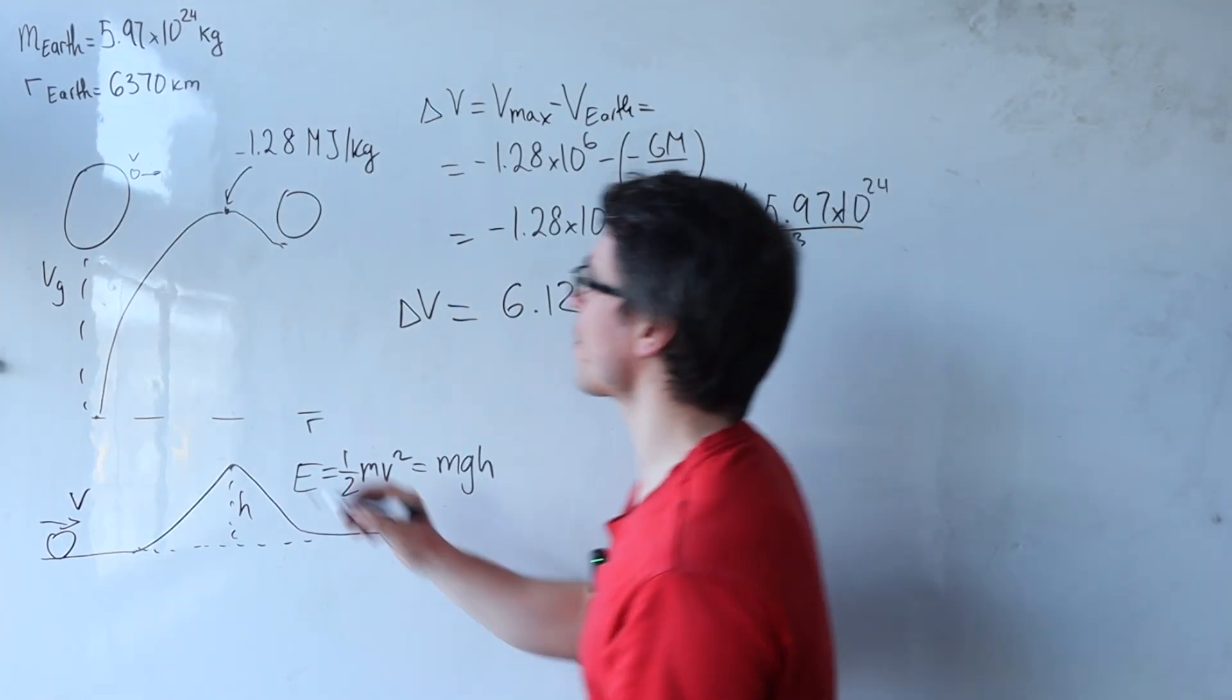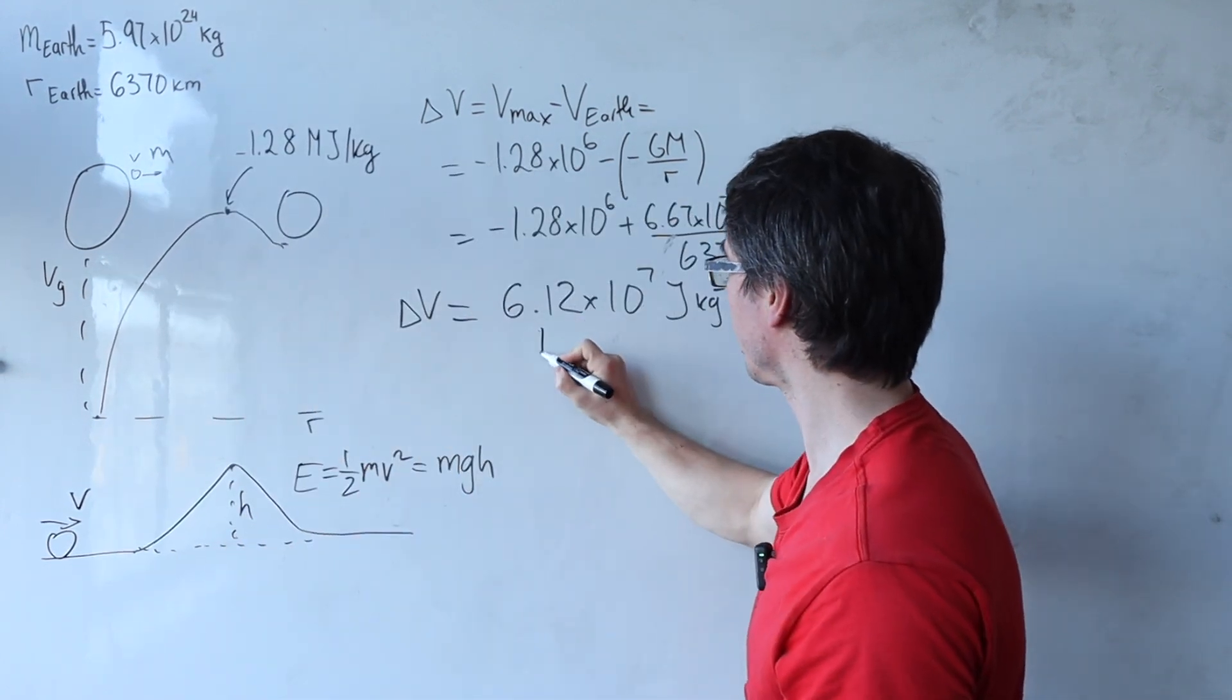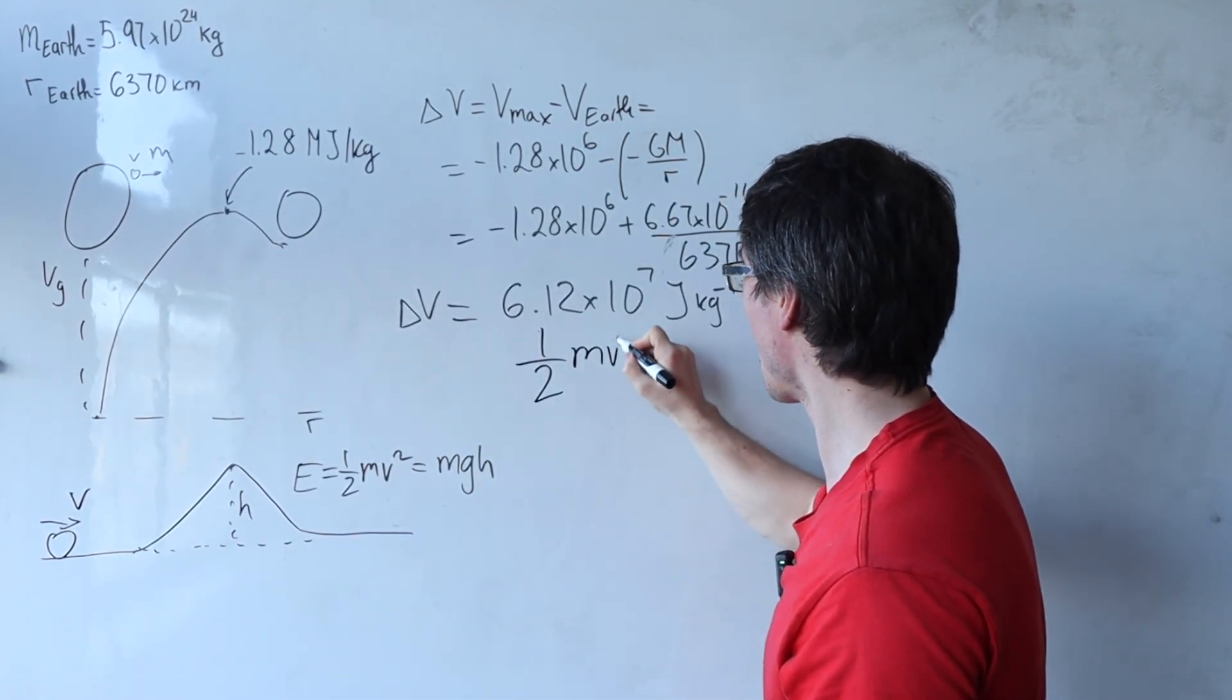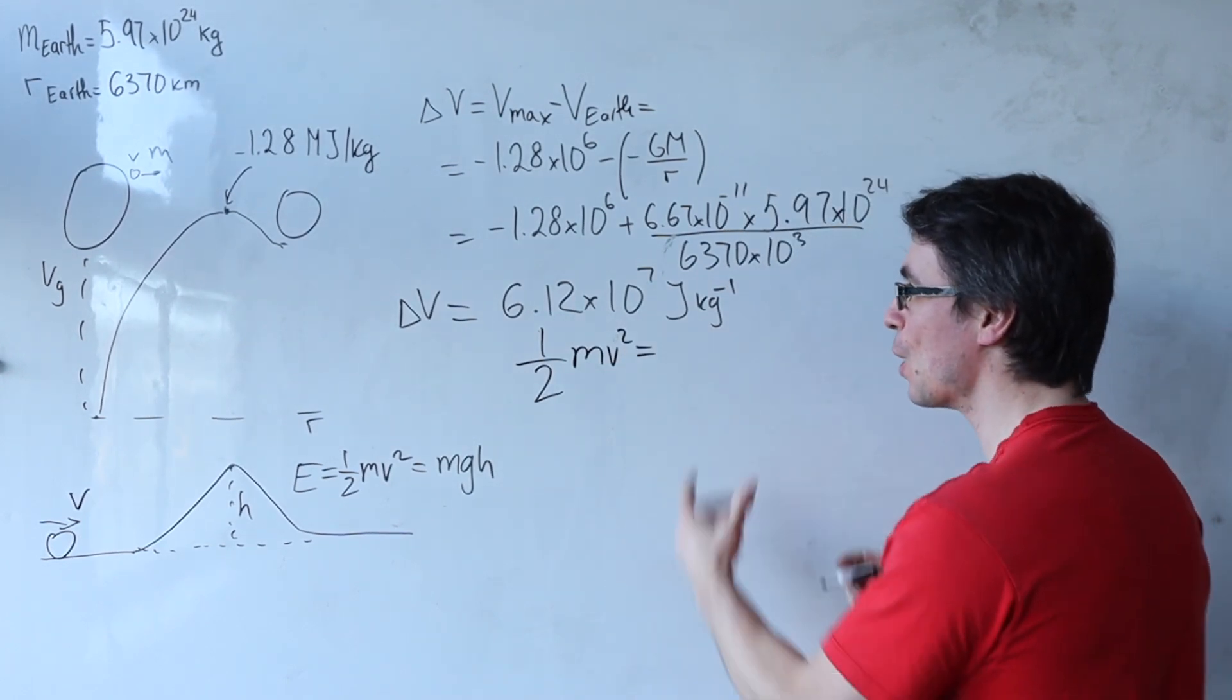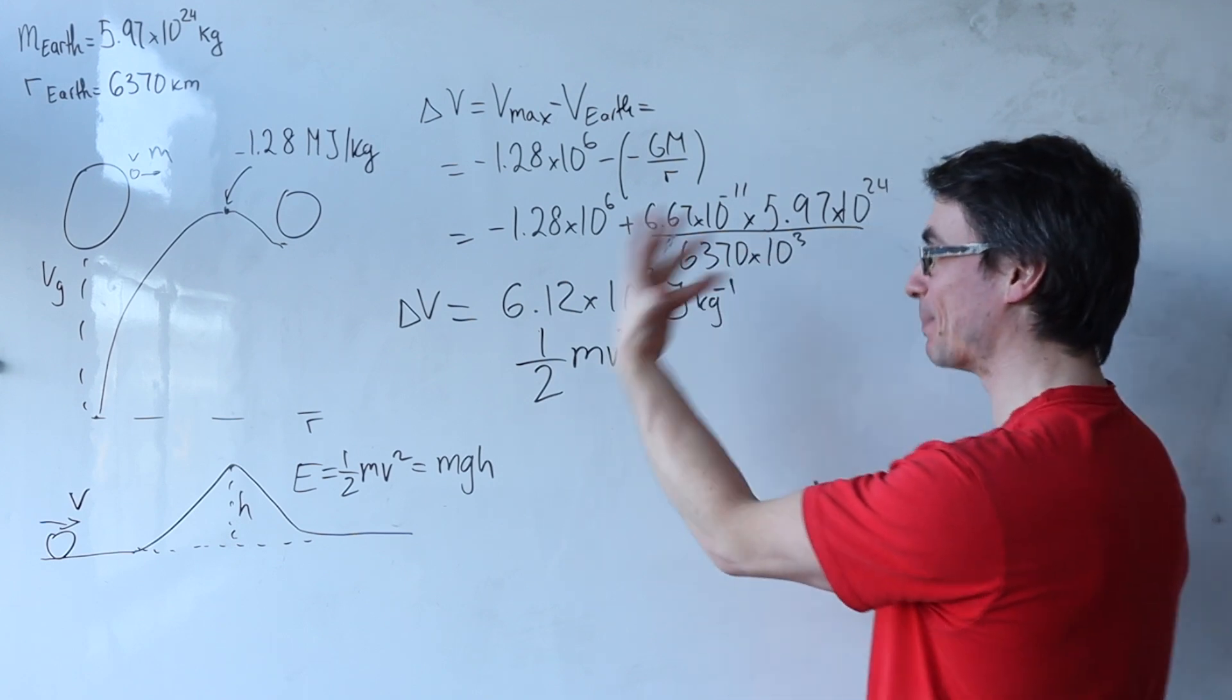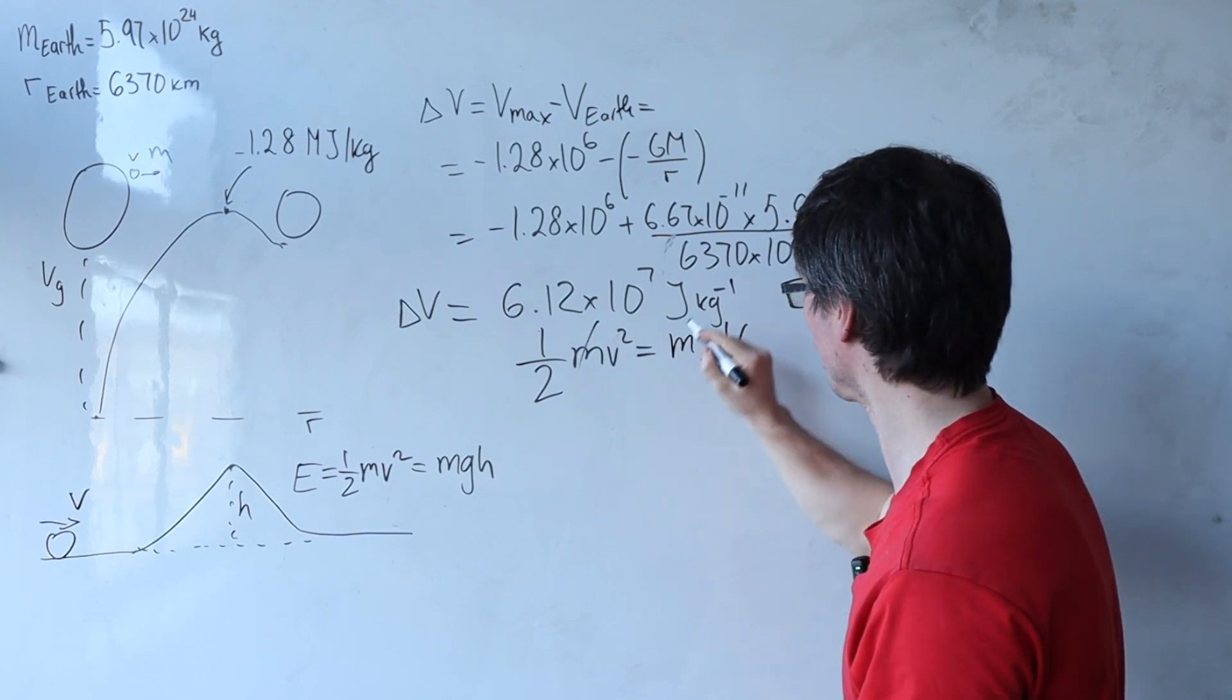Now let's say that we're throwing a rock of mass m, then we can simply set a half mv squared to be equal to the change of gravitational potential energy, which is equal to mass multiplied by the gravitational potential like so. Those are going to cancel.